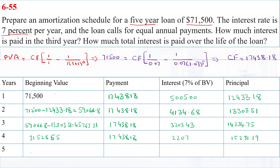In Year 5, the beginning value is $16,297.37. The final payment of $17,438.18 covers the remaining interest and principal to fully pay off the loan.